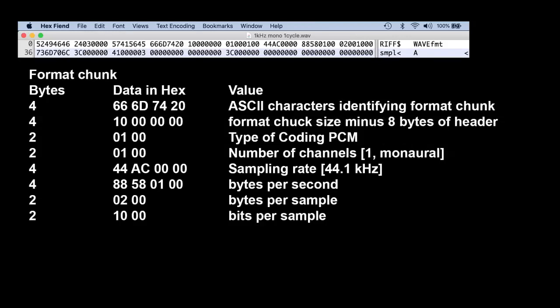The second chunk is the format information. This is crucial information because it contains the clocking information that tells the system how fast to play the file.